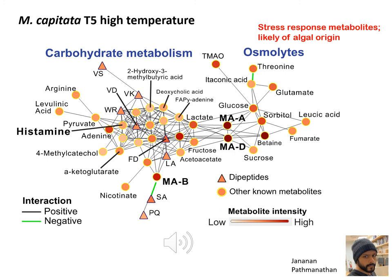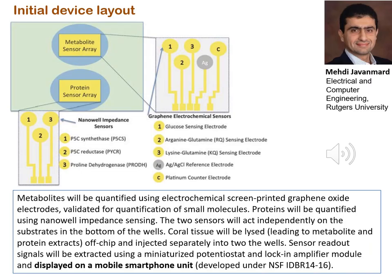We have been using correlation network analysis to understand the relationships of different metabolites within the coral systems. One of the sub-networks from this analysis is shown here and shows the relationship between carbohydrate metabolism and osmolites. The osmolites are likely created by the algal symbiont and include well-known metabolites such as glutamate, sorbitol, glucose, and betaine. Interestingly, two monopuric acids form the bridge between the accumulation of these stress osmolites and carbohydrate metabolism, shown on the left of this image. These sorts of analyses are powerful and allow us to generate hypotheses about the role of key genes in the stress response in corals.